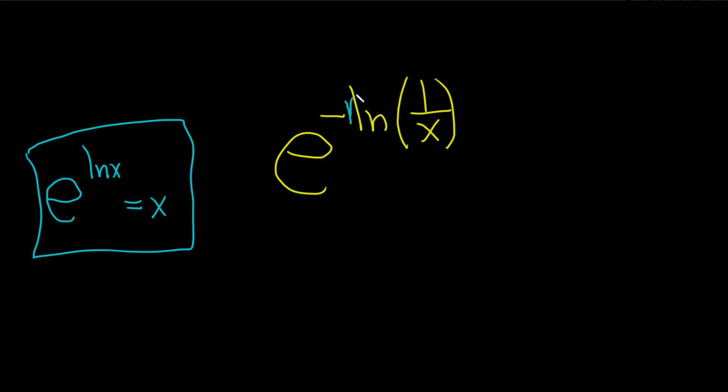And so what we can do is we can bring this upstairs using what's called the power rule for logarithms. That basically says if you have a number say p in front of your natural log, you can just take this p and bring it up and this becomes the natural log of x to the p.